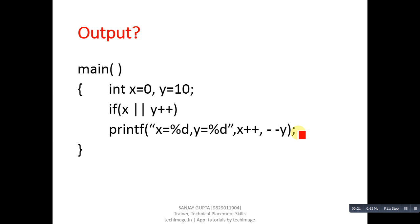So first skill-based question: this is a code segment, you have to identify the output of this code segment. I am showing the output - X will print 0 and Y will print 10.